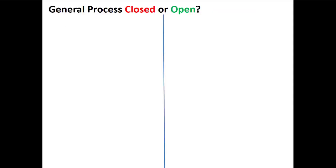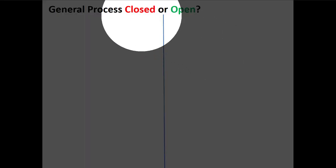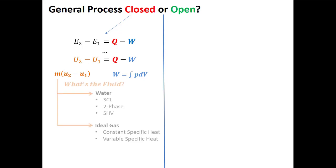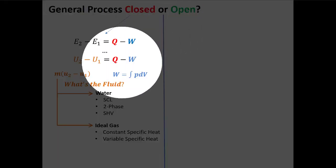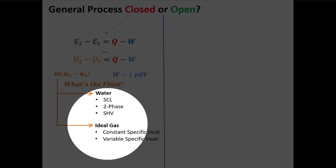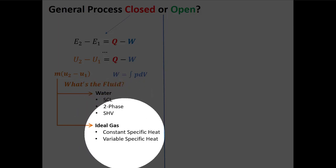We're approaching the point where you know how to do open systems and closed systems with the first law. The closed version of the first law typically talks about elapsed time: the change in energy in the system equals heat in minus work out. We can find work by the integral of P dV, and delta U as M times delta specific internal energy, then use the first law to find heat transfer. To find the change in specific internal energy, we need to know the fluid and, if water, the phase; if an ideal gas, whether we model specific heats as constant or variable.